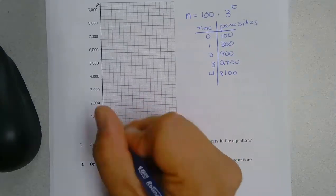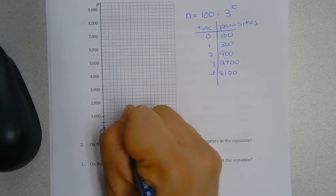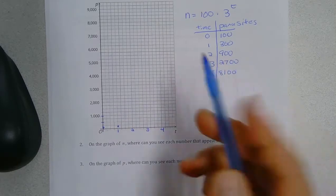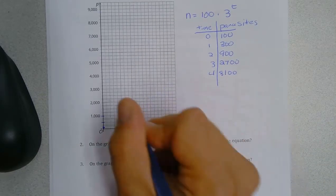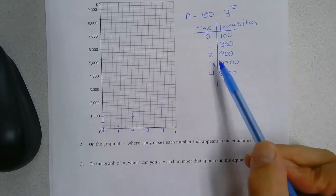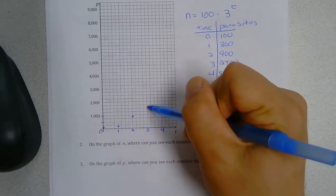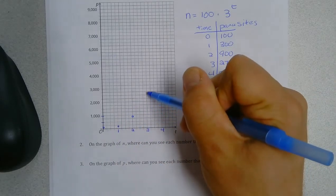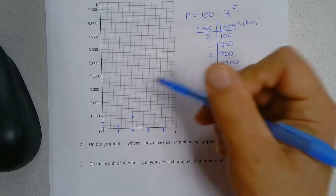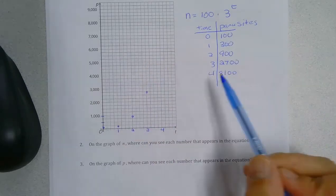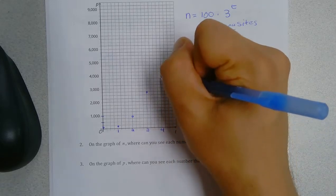So at time 1, we go up to 300. At time 2, we go up to 900. Time 3, we go up to 2,700. And time 4, we go up to 8,100.